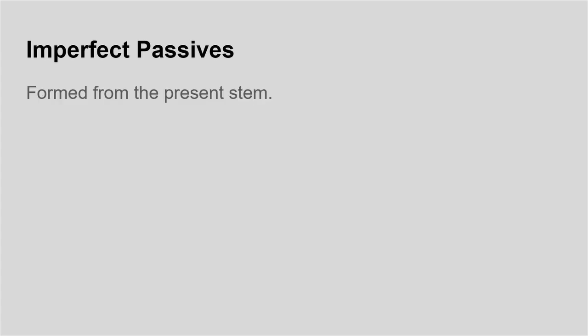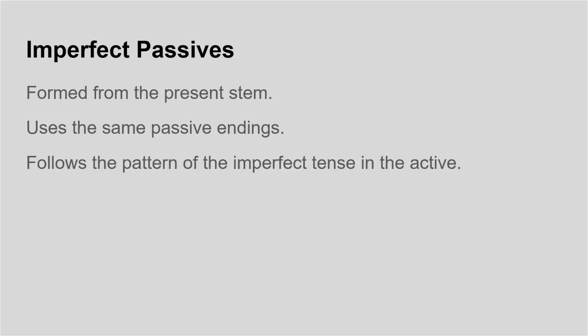So imperfect passives are really easy to spot in Latin. They're formed from the present stem, they use the same passive endings as the present passive verbs — which you can find in my previous video — and they follow the pattern of the imperfect tense in the active.